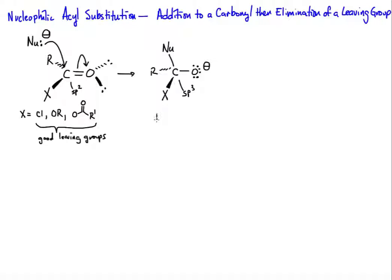So as such, this is called a tetrahedral intermediate. Notice the bond angle about the carbon has changed from 120 to now 109.5.